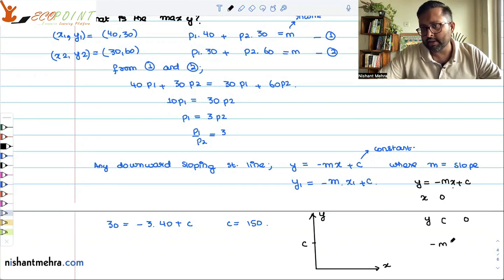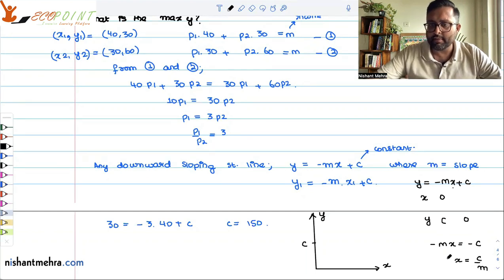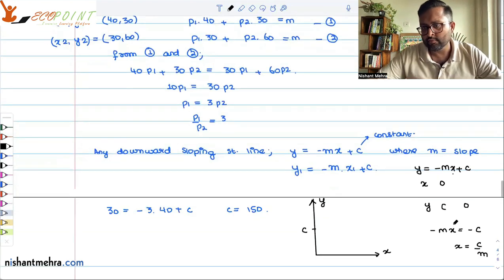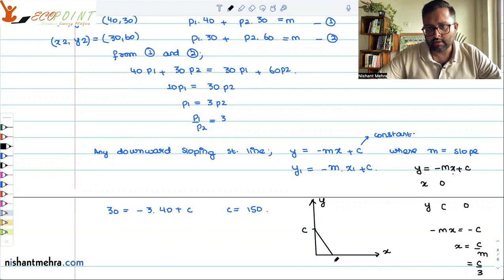Minus mx equals minus c, so x equals c by m. But in our case, what is m? 3. So in our case, that is c by 3.